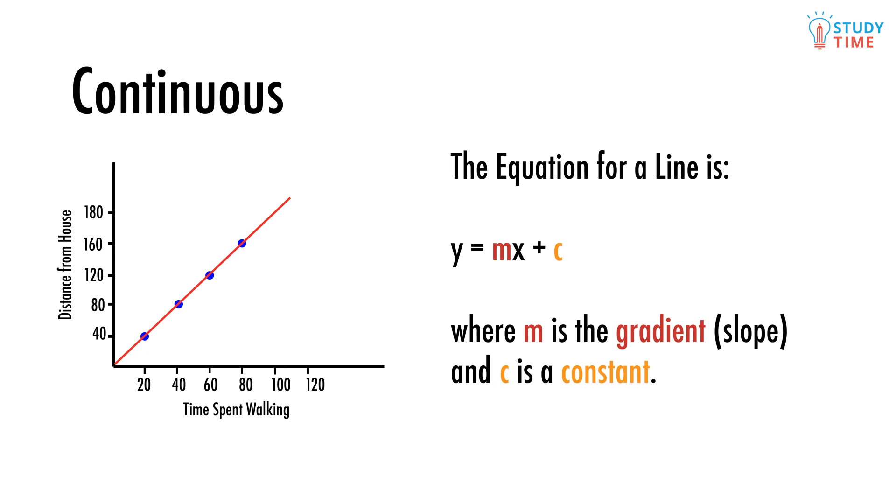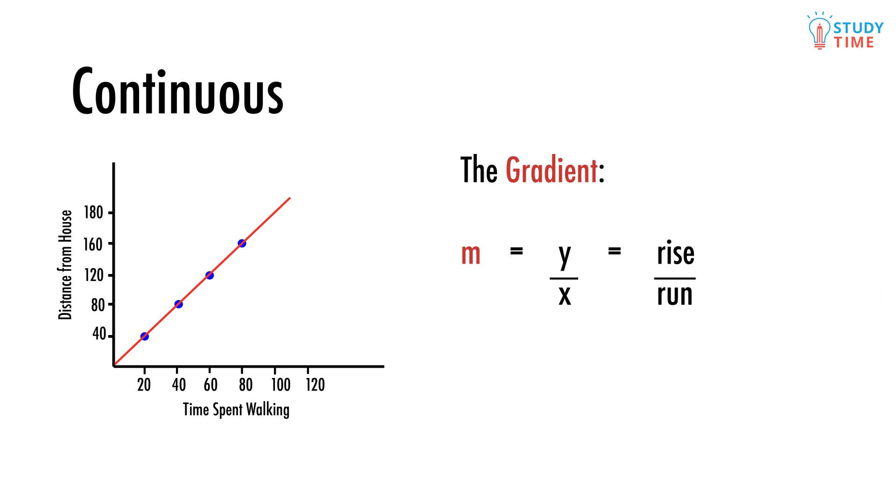At any point on any line or curve, the gradient is just the y value of that point over the x value. You can remember it as rise over run.